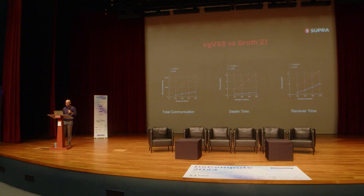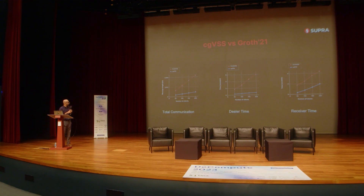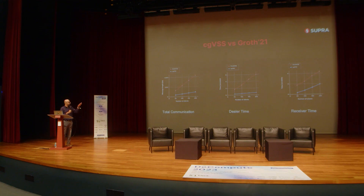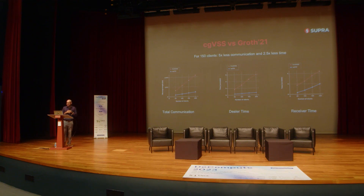Comparing with Groth21 as our baseline using a simplified version: with increasing number of clients, the difference gets larger and larger. For total communication and dealer/receiver time, we are slightly worse on two metrics but much better than Groth21 overall. For example, with 150 clients, we get about 5x less communication and 2.5x less time overall.